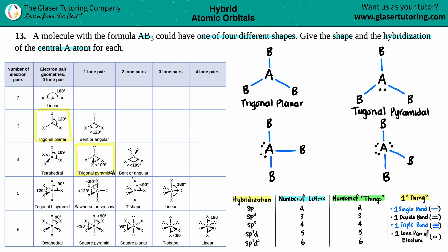Let's find the next one with three groups. This one has two — that's out. This one doesn't have three. This one has four. Here it is — the next shape is called T-shape. And the last one is also T-shape. So that's fun — they all have three bonding groups.